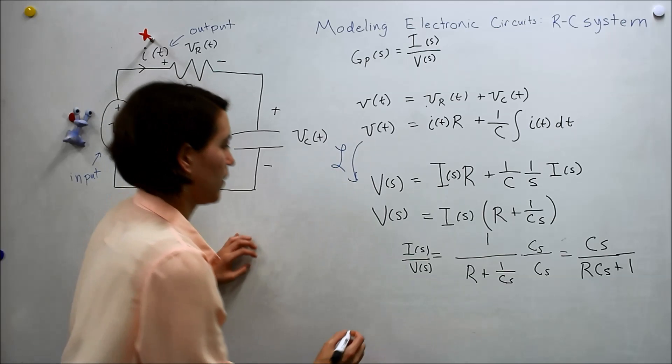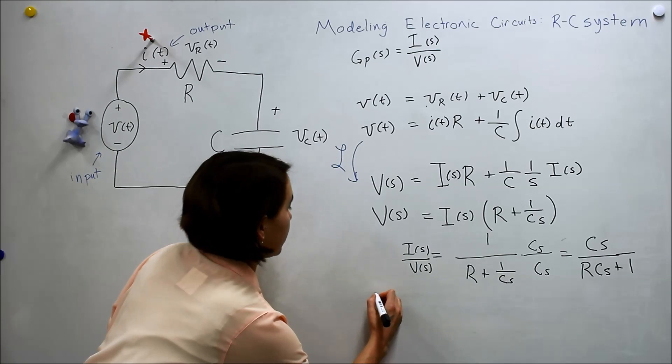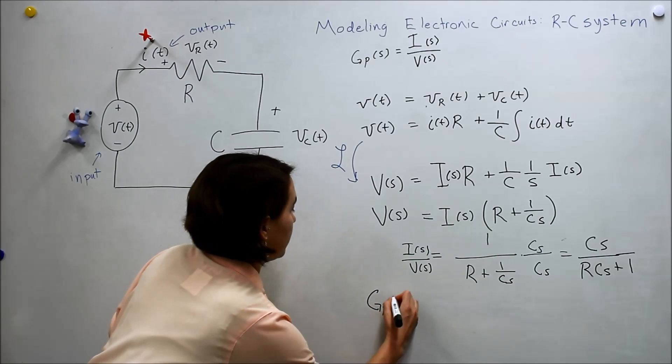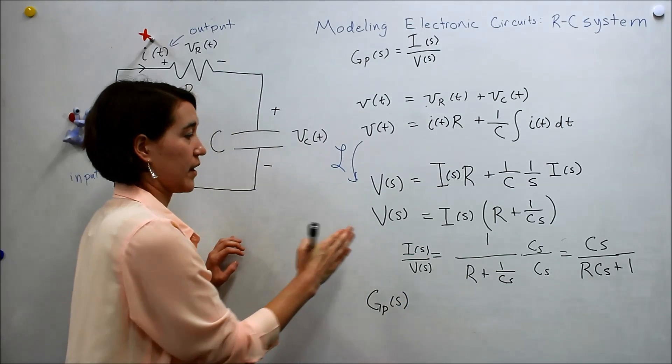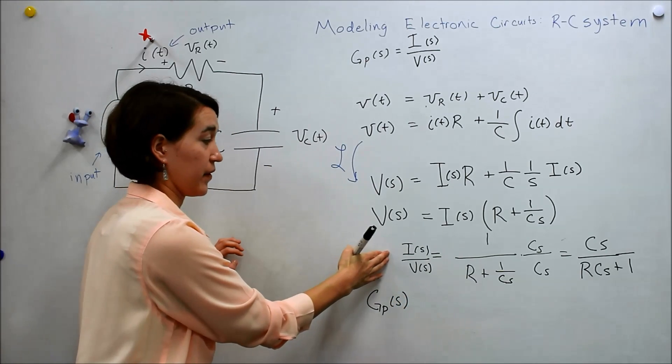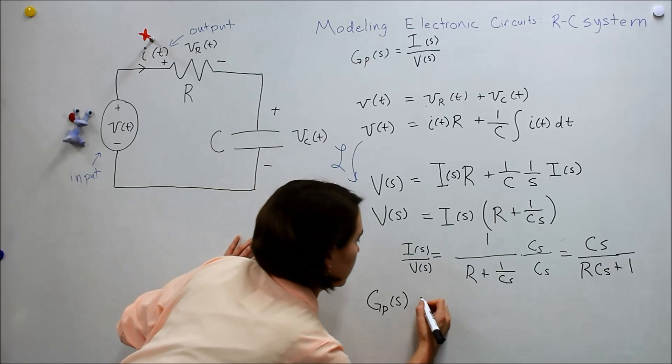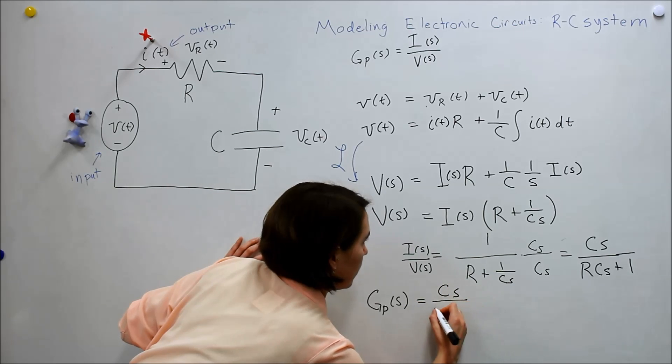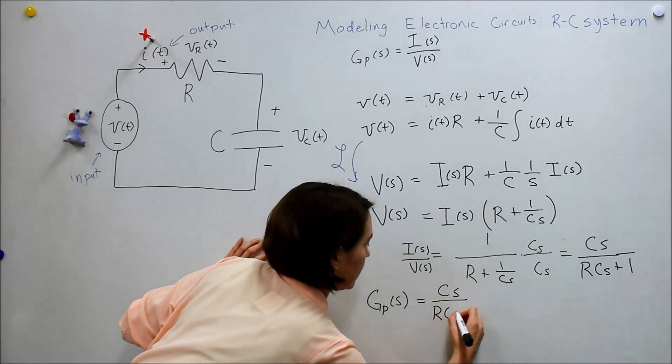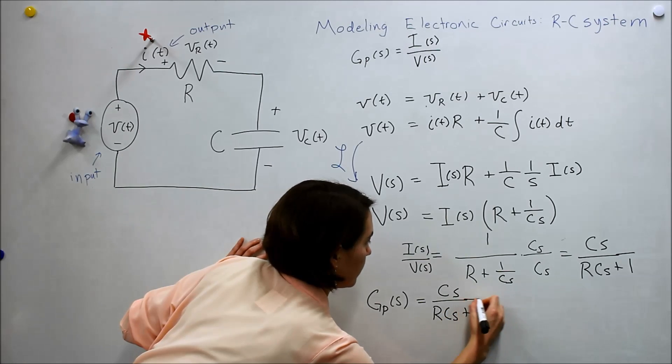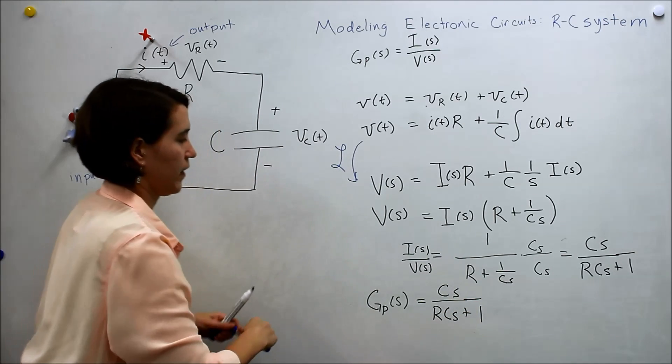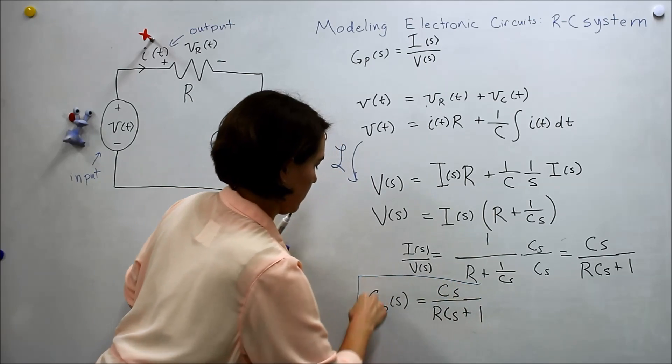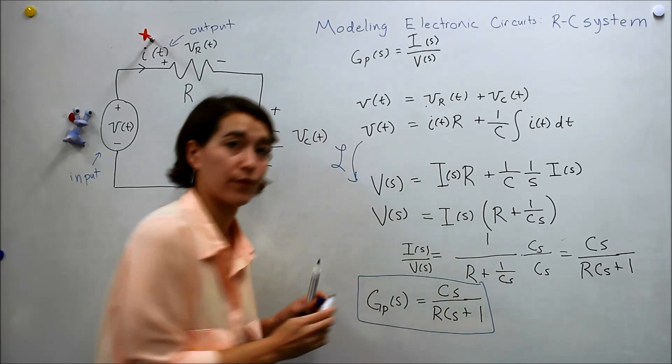So our overall transfer function then, if you want to write down here, Gp of s, this time looking at the current as our output relative to the input of the voltage, is c s over r c s plus 1. So this would be our transfer function for that.